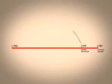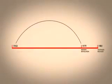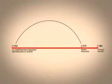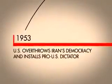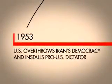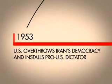But to really understand, we have to go back to 1953, which is where the story begins for most Iranians. This was the year that the U.S. overthrew Iran's democracy and installed the Shah, a pro-U.S. dictator.